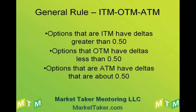A quick recap on in the money, out of the money, and at the money options. For a call, in the money means the strike price is lower than the current stock price. For a put, the strike price is above the current stock price. Out of the money for a call is the strike price above the current price, and for a put it'd be below the current stock price. At the money, for a call and a put, is basically when the stock price is right at the current strike price. So options that are in the money have deltas usually greater than 50, options out of the money usually have deltas less than 50, and options at the money have deltas right around 50.